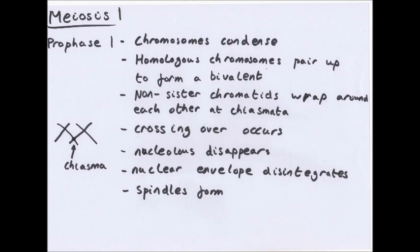Also, just like a normal prophase of mitosis, the nucleolus disappears and the nuclear envelope disintegrates. A spindle forms made of protein microtubules from the centrioles.